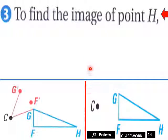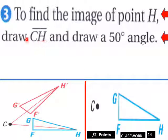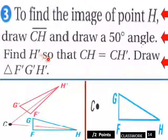And then for H, to find the image point of H, here's our existing partial projection here. So we need to draw CH and then draw a 50 degree angle. So CH is all the way from H to C, like this. And then draw a 50 degree angle here, out here, which would be H prime, would be out here. And then H prime will be so that CH equals CH prime. Then draw triangle F prime, G prime, H prime. So here is your rotation here of this triangle to this triangle, a 50 degree rotation.